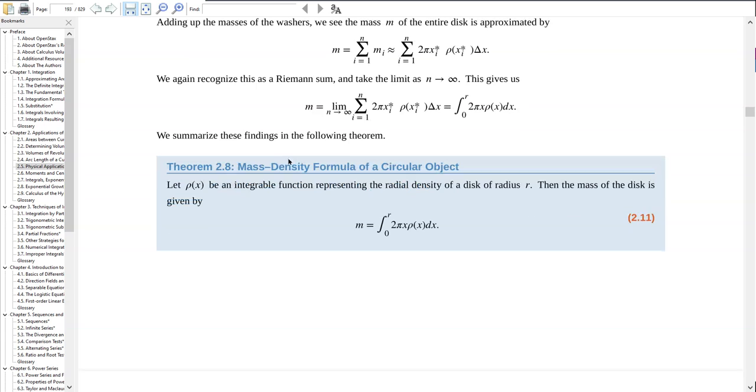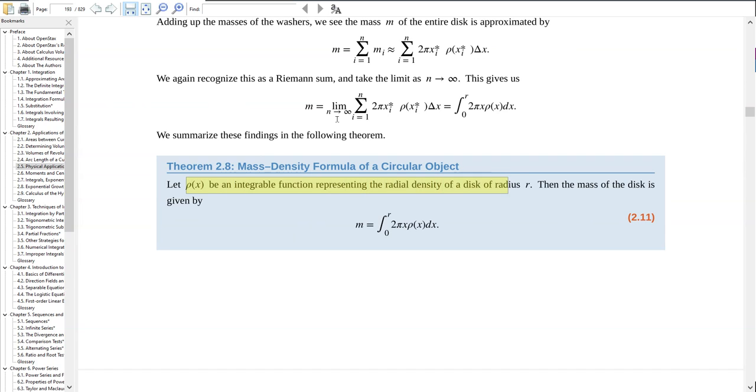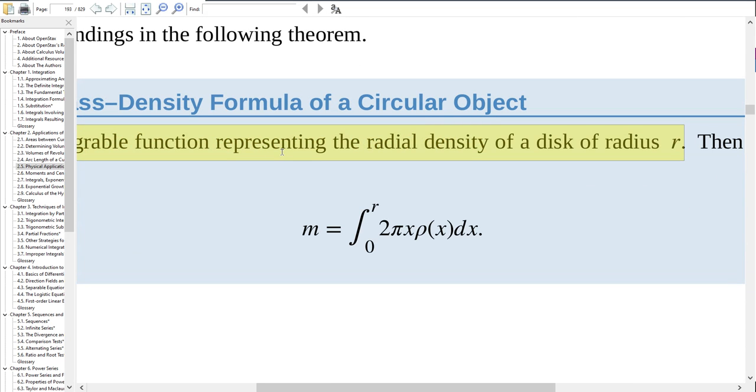So here's the working all that out. What we really need is right here, mass density formula of a circular object. So this is a radial density of a disc of radius r, and this one's a bit different. It's not just the integral of ρ(x), but we've got 2πx times ρ(x) dx.